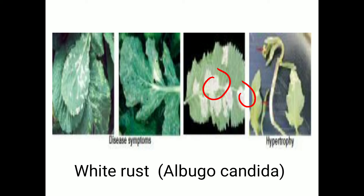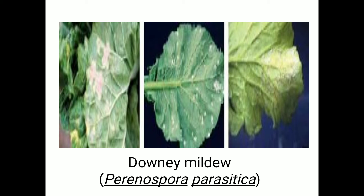Regarding perpetuation, the primary source of infection is oospores in plant debris or soil, and the secondary source is sporangia carried by air currents. For management, spray Bordeaux mixture at 0.8 percent. Diseased plant debris should be destroyed. If infestation is severe, spray Dithane at 0.3 percent or Chlorothalonil or Metalaxyl at 0.1 percent.